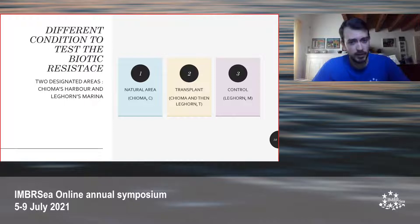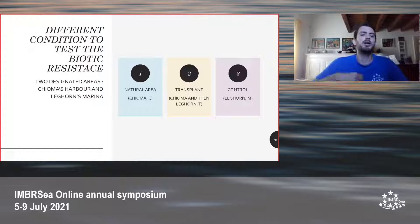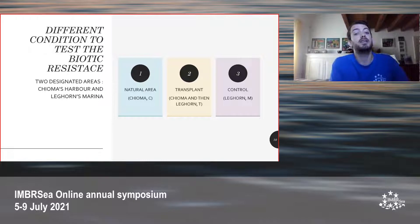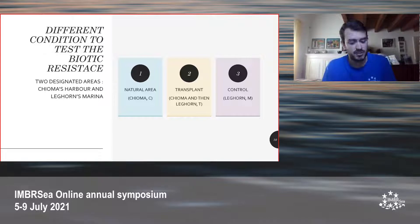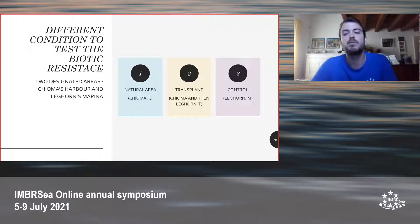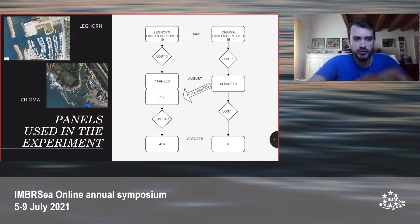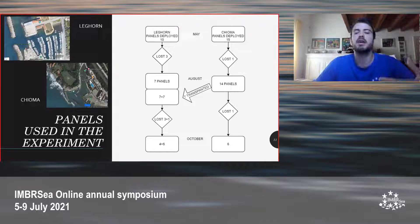We chose two designated areas to conduct this study. Chioma, which is a small natural harbour under Italian law protection, used as a natural area. And the control, which is Livorno Marina — a very important port in Tuscany, Italy, with a lot of boat traffic. The third condition is transplant, which is the focus of the biotic resistance: we put some panels first in the natural area in Chioma, and then after two months we moved them to Livorno to see the colonization of the panel. As you can see from the photos of the two sites, they are quite different — Livorno Marina has a lot of boats and high traffic, while Chioma is a very quiet and natural place.